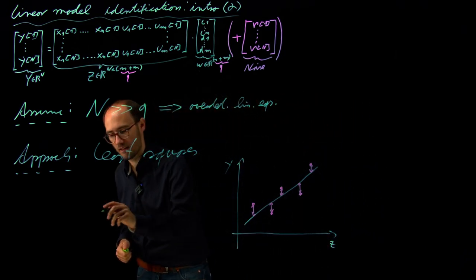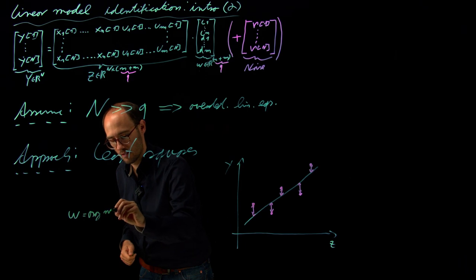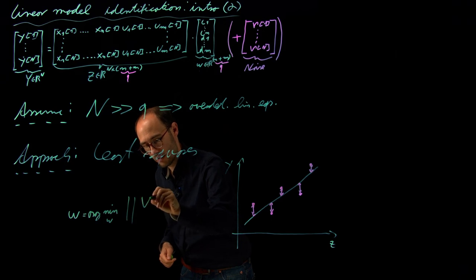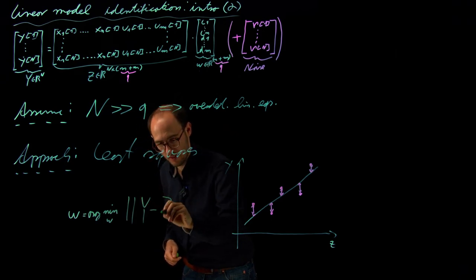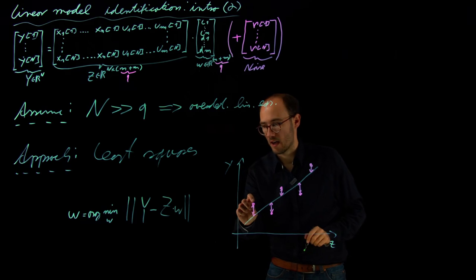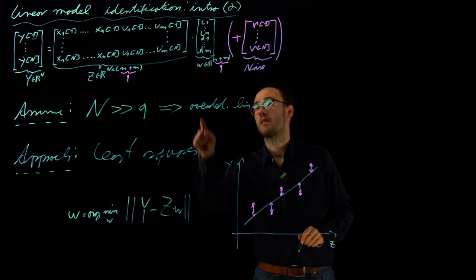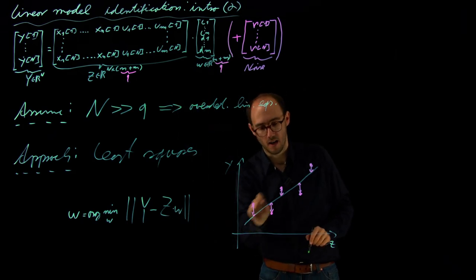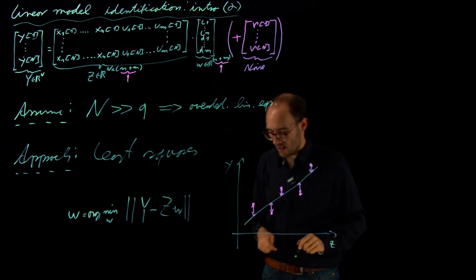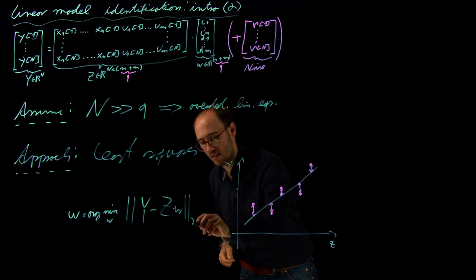we are interested in finding the parameter vector w which is identical to arg min with respect to w of capital Y minus Z times w. That would be our model error. Y are the different measurement points, our outputs, and Z times w is our model prediction—the linear model I assume in this cartoon example. To represent the sum of the quadratic residuals, we take the two-norm,